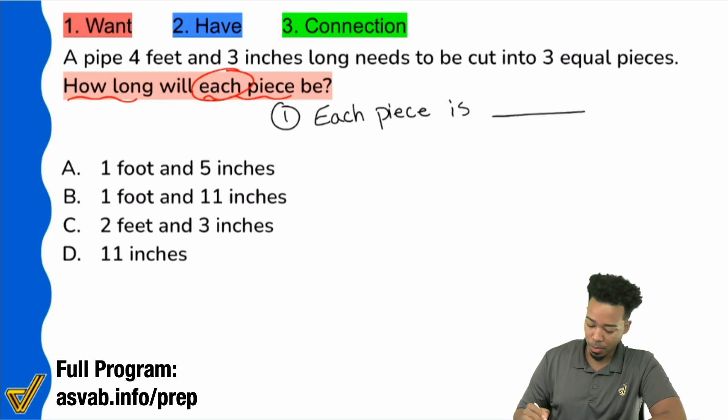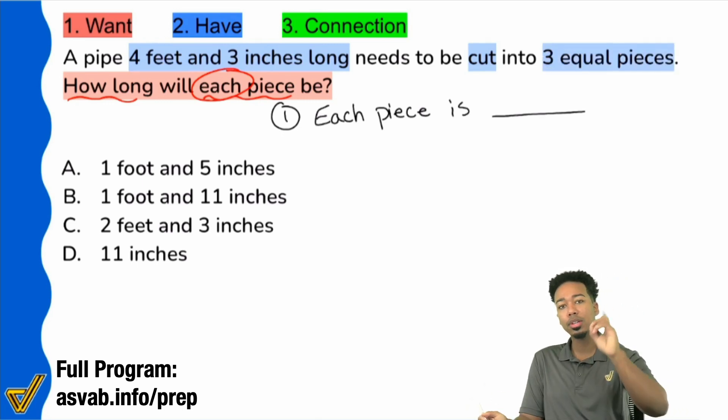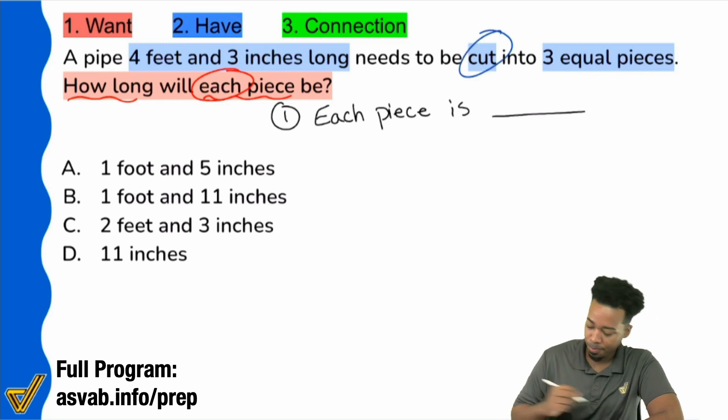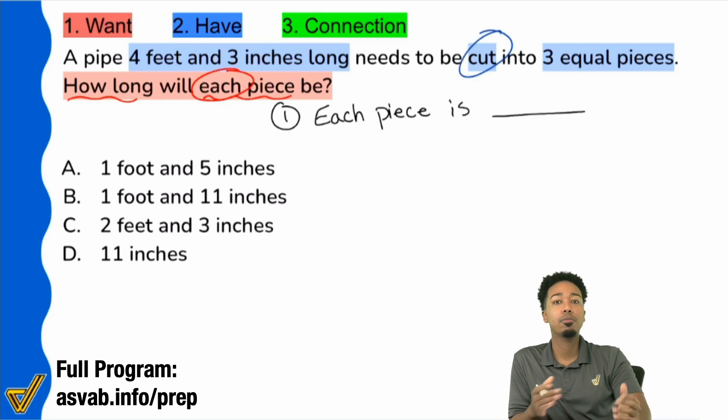Let's look at the information to see if that's even going to be necessary. So let's look at what we have. A pipe four feet and three inches long needs to be cut into three equal pieces. Okay. So here, a pipe four feet, three inches long needs to be cut three equal pieces. So there's one key word here I'm going to highlight that should stand out like a sore thumb for you. And that's going to be the word cut. The word cut right here.